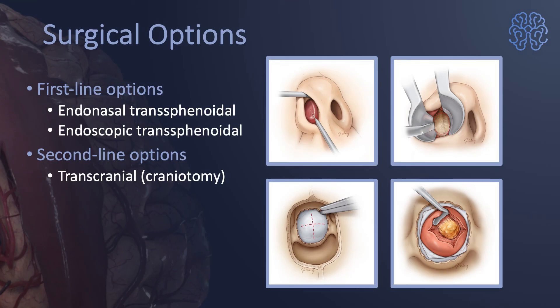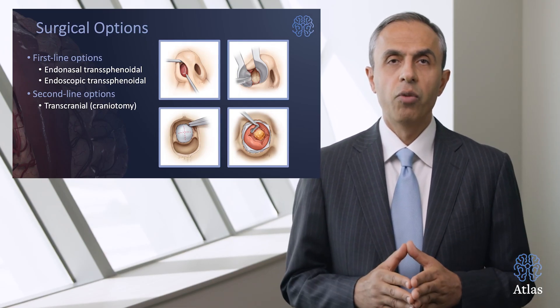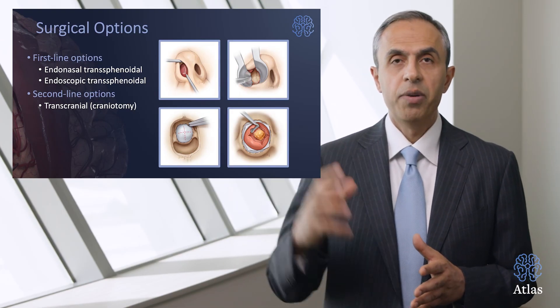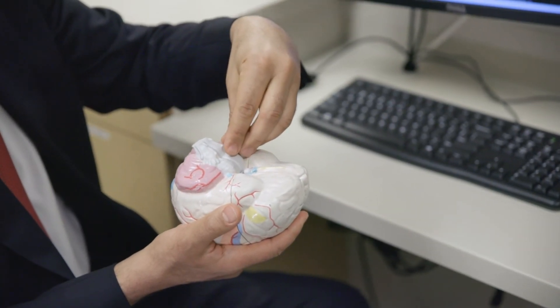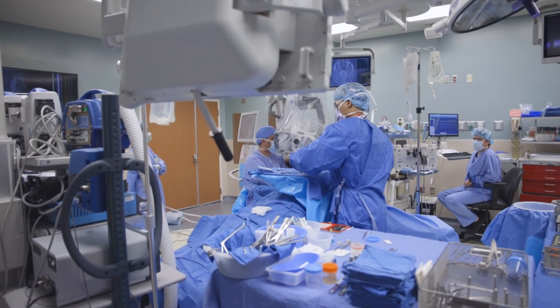The surgical options are endonasal transsphenoidal and endoscopic transsphenoidal surgery. The endoscope uses a small camera through the nose to expand visualization and remove the tumor in a minimally invasive manner. Very rarely, a second-line option such as a craniotomy — removing a piece of skull — is needed. Overall, 99% of pituitary adenomas are benign and not cancerous, which is very important to know. Using a surgeon with extensive experience in pituitary adenoma removal is critical for the best outcome. Thank you.